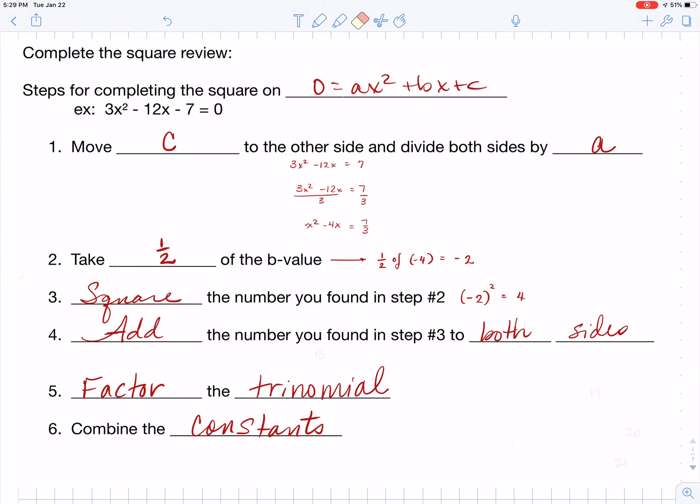Step number 4, add what you found to both sides. So here you see that I have my plus 4 on the left and I have my plus 4 on the right.